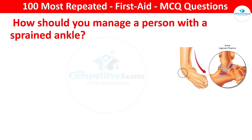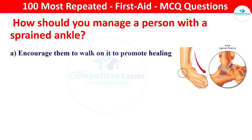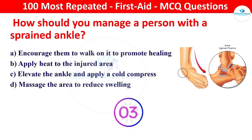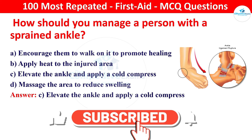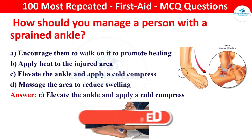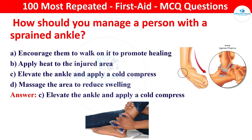Next question: how should you manage a person with a sprained ankle? Options: encourage them to walk on it to promote healing, apply heat to the injured area, elevate the ankle and apply a cold compress, or massage the area to reduce swelling. The right answer is elevate the ankle and apply a cold compress. Elevation and cold compression help reduce swelling and promote healing in a sprained ankle.